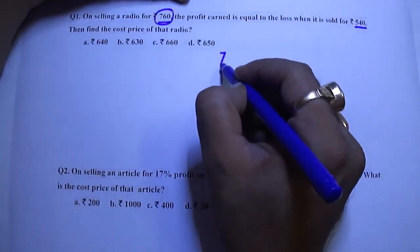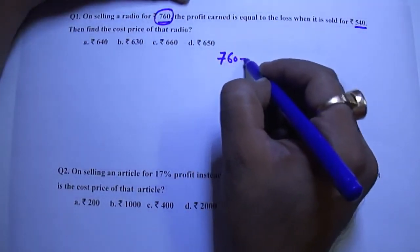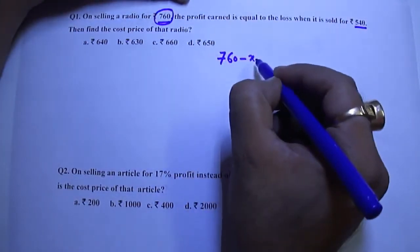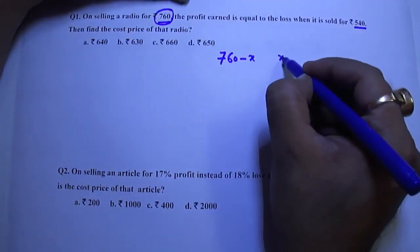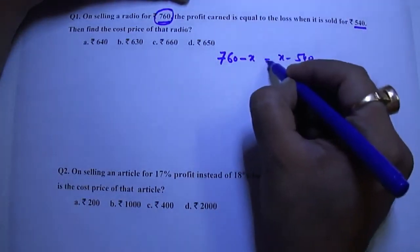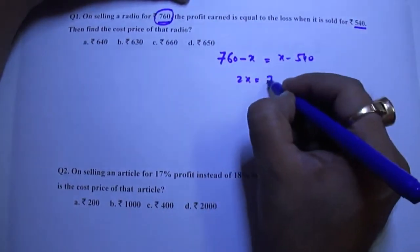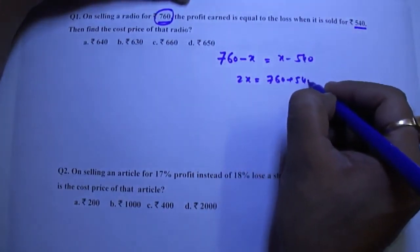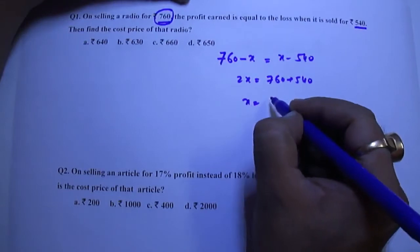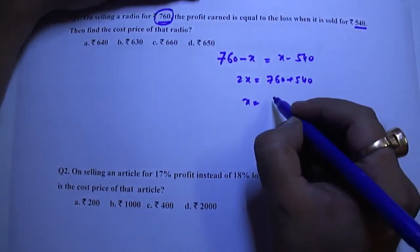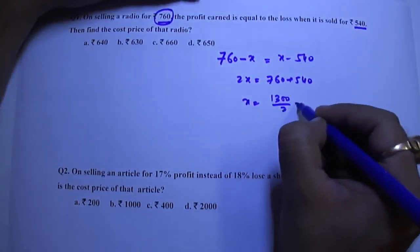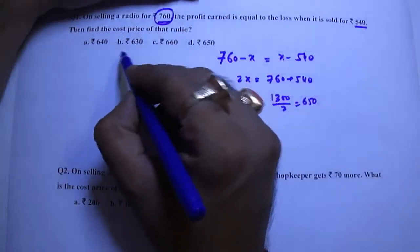It means let CP be X. So 760 minus X gives us profit and X minus 540 gives us loss. Both are equal. This gives us 2X equals 760 plus 540. The result would be 1300 divided by 2 equals 650. Answer is D.